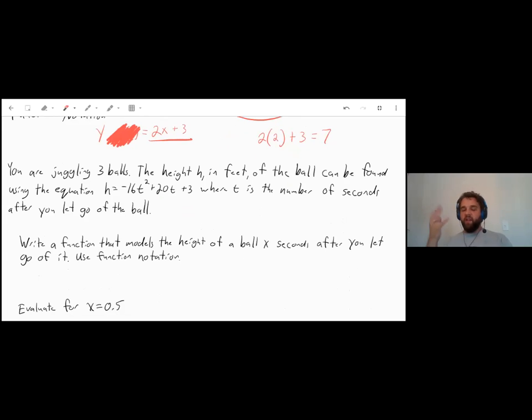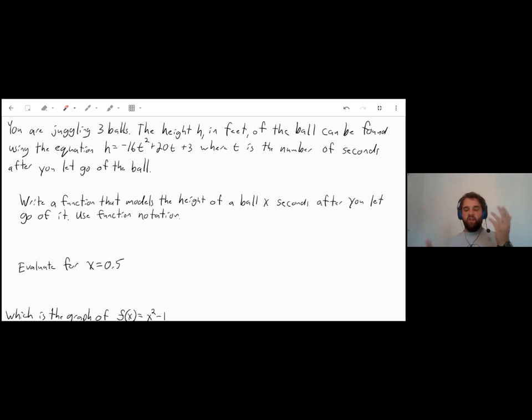So let's just say you are juggling three juggling balls. And the height h in feet of the ball can be found using the equation h equals negative 16t squared plus 20t plus 3, where t is the number of seconds after you let go of the ball. Write a function that models the height of the ball x seconds after you let go of it. Use function notation. Well, in this case, we're using function notation, so we'll just say f of x. And that's going to be the height of the ball. Well, f of x, we're replacing h with that. And now we're saying that it's x seconds. Well, t we originally had as our number of seconds. So we're just replacing the t with an x. So it's just going to be negative 16x squared plus 20x plus 3.